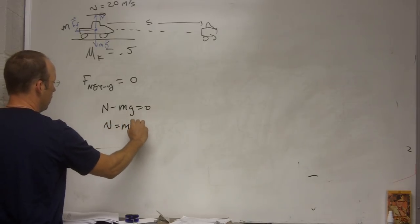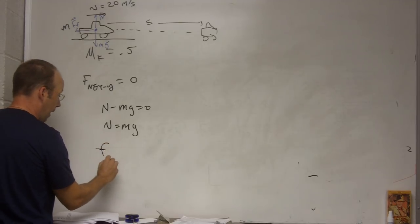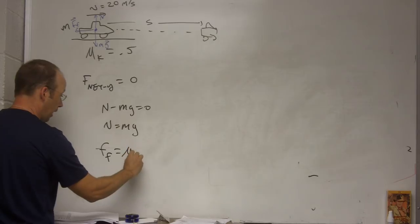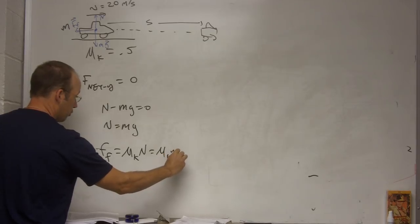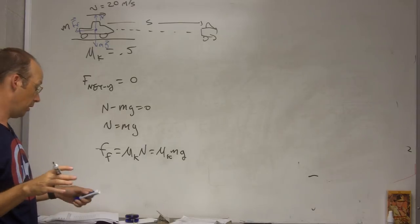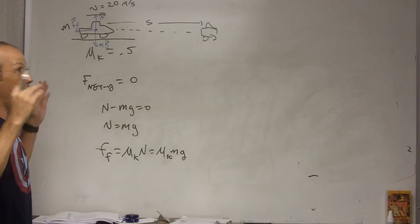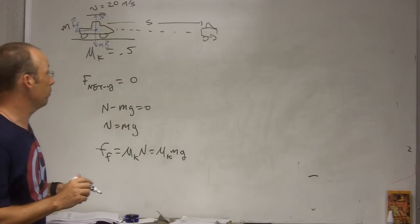n equals mg. So the model for friction says the frictional force, the magnitude, is equal to mu k times n equals mu k mg. Okay, but I'm not going to find the acceleration in the x direction. That's not what I want to do. I want to find out how far it takes to stop.